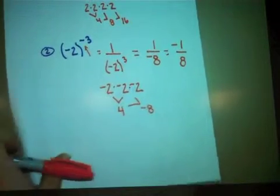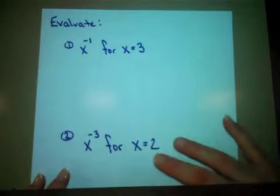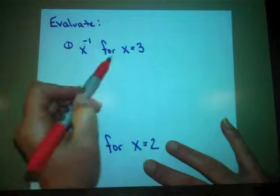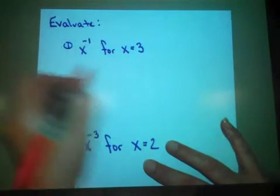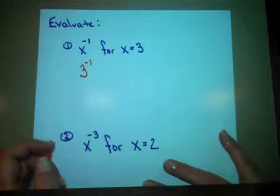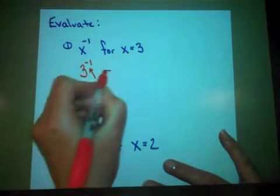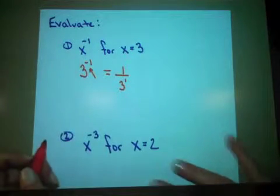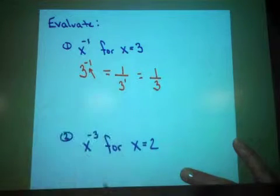Normally we like to write the negative in the numerator, so most of your teachers will ask you to simplify that to be the fraction negative 1 over 8. Now let's look at what happens when we introduce variables. We can say something like: evaluate x to the negative 1 for an x value of 3. We first replace the x with a 3, so now we have 3 to the negative 1 power. The negative 1 turns this into 1 over 3 to the first power, which is just 3. So this simplifies to the fraction 1 third.